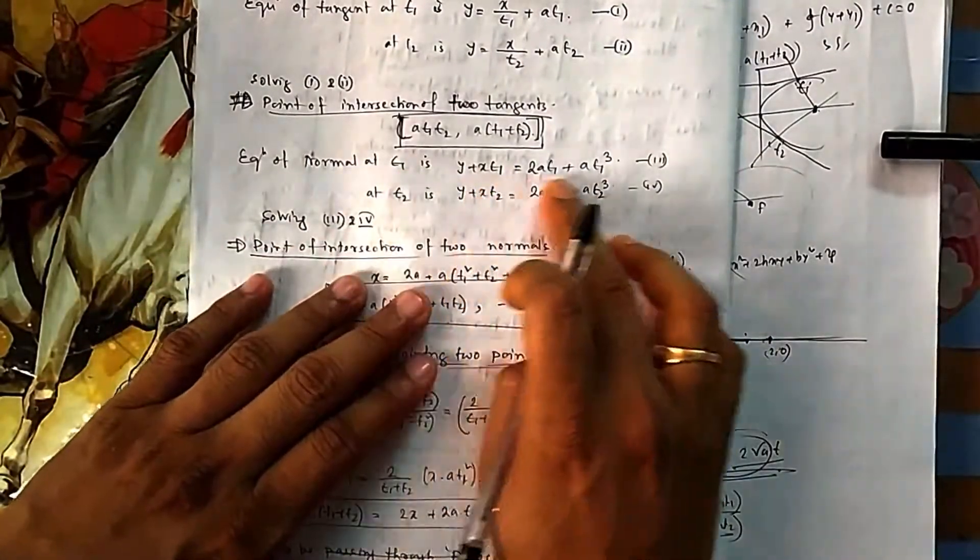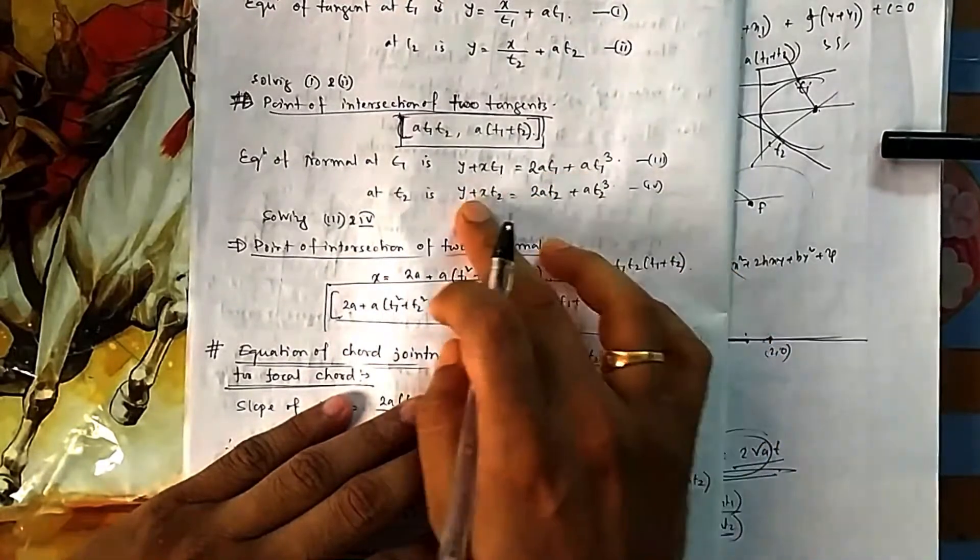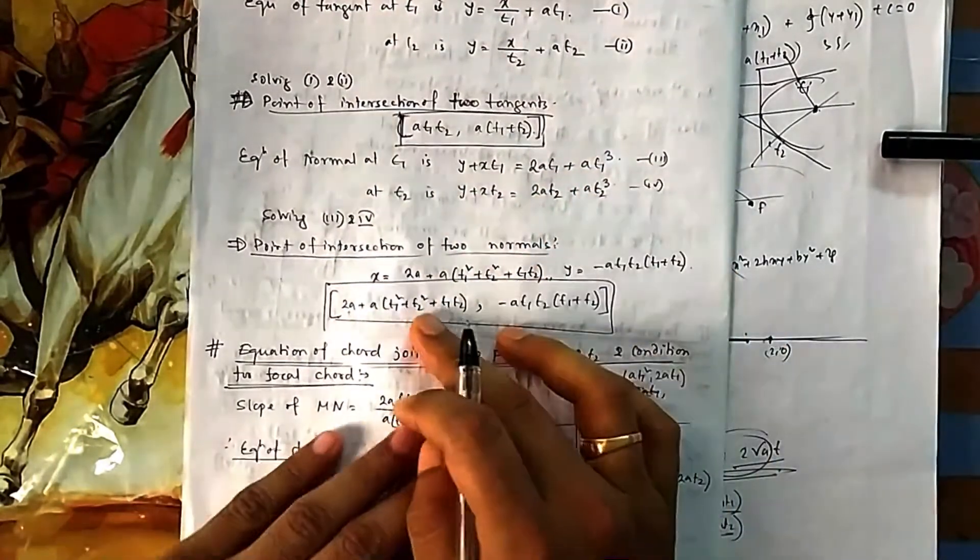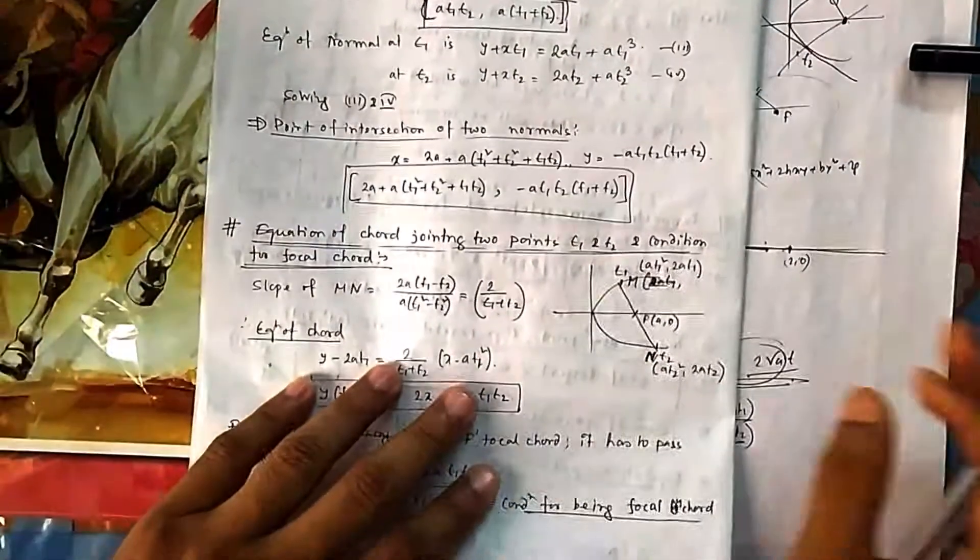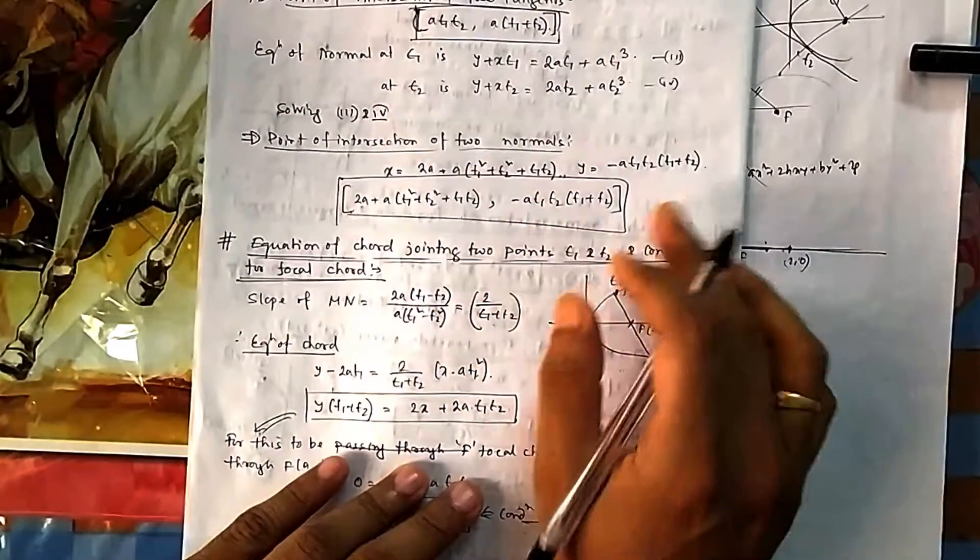Similarly, equation of normal at t1 was this, normal at t2 is this. Similarly if you solve this then this coordinate point of intersection of the two normals also comes to this.